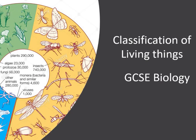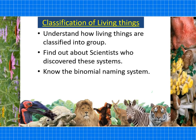Hi, Dr Biology here and this video is the classification of living things. It's in GCSE Biology and also in Combined Science Biology. The main topic is Inheritance, Variation and Evolution. I'll be talking about understanding how living things are classified into groups, finding out about scientists who discovered these systems, and helping you learn the binomial naming system.